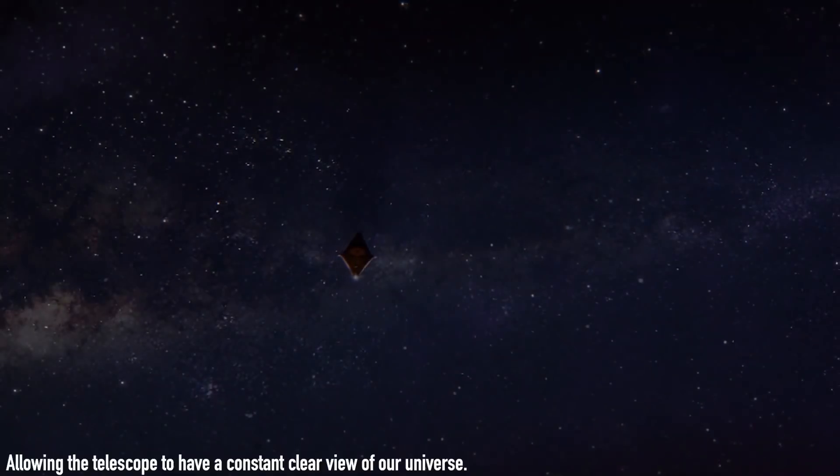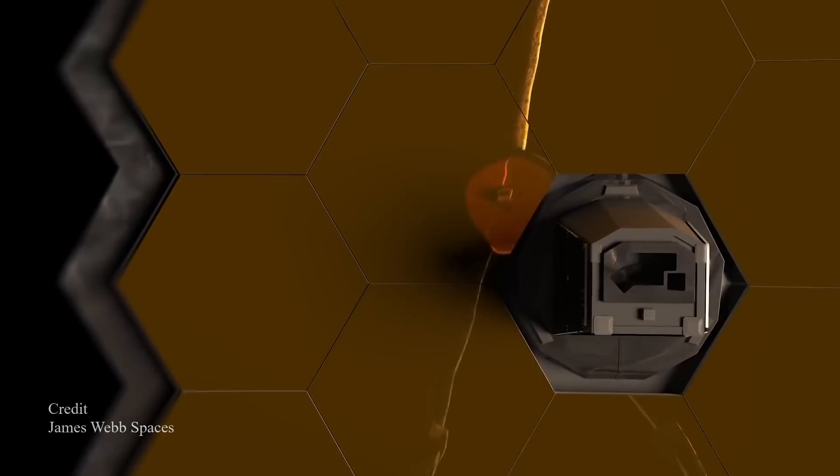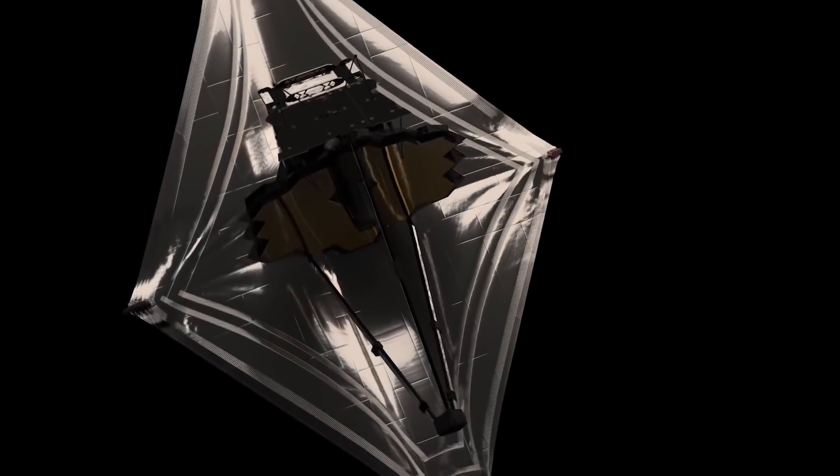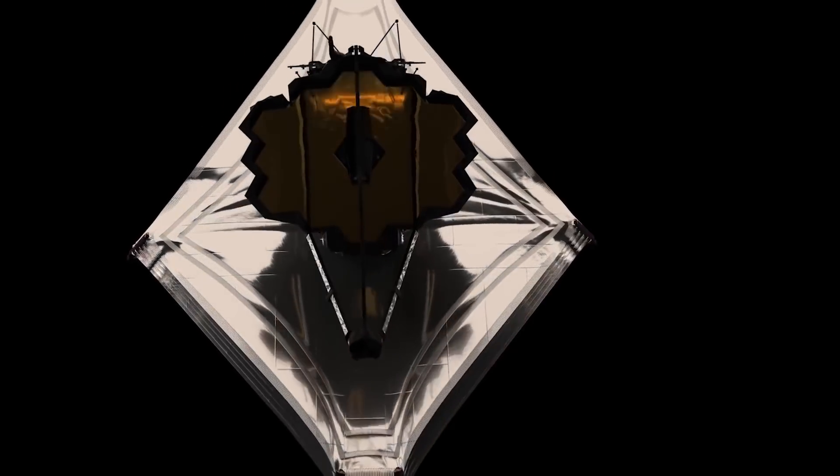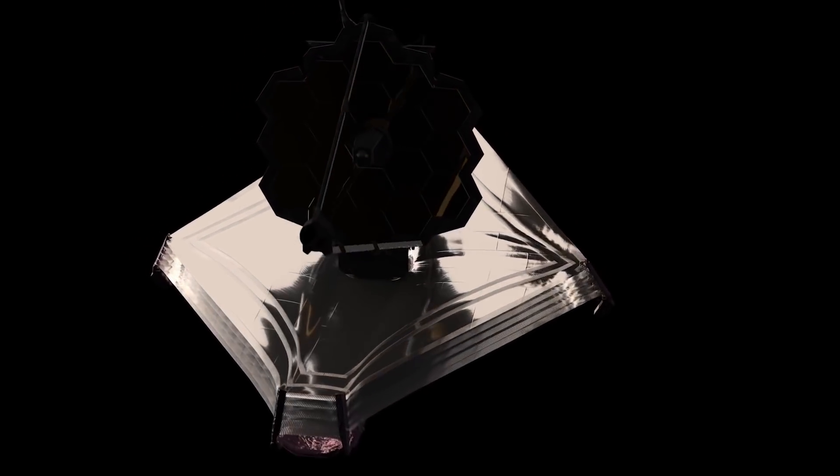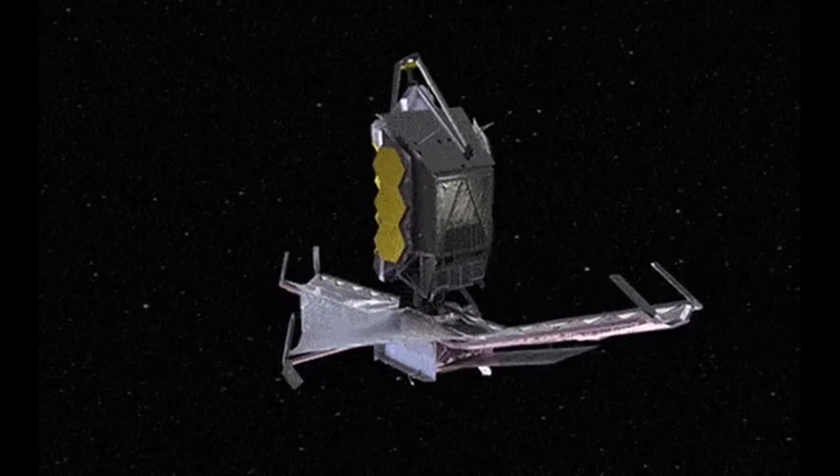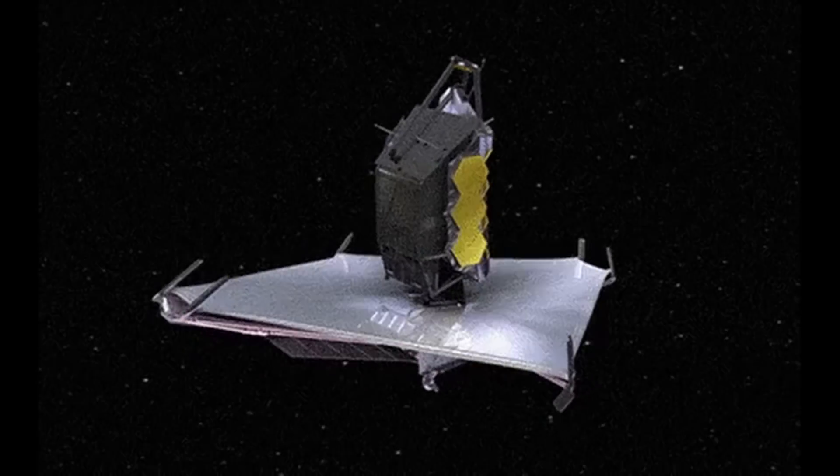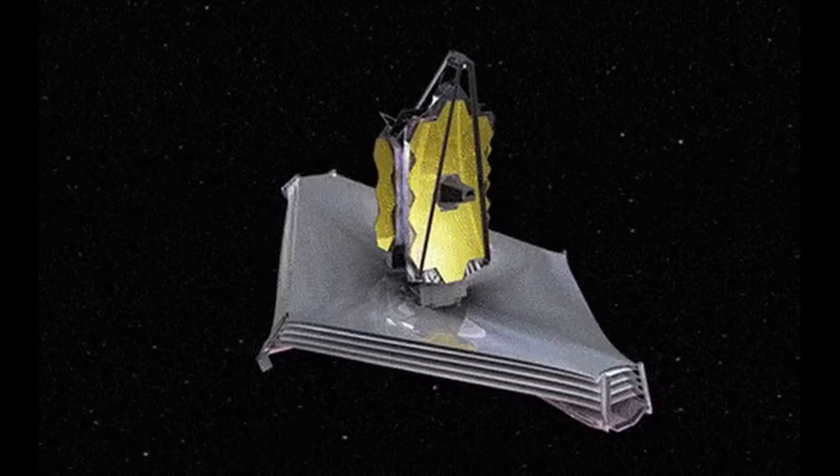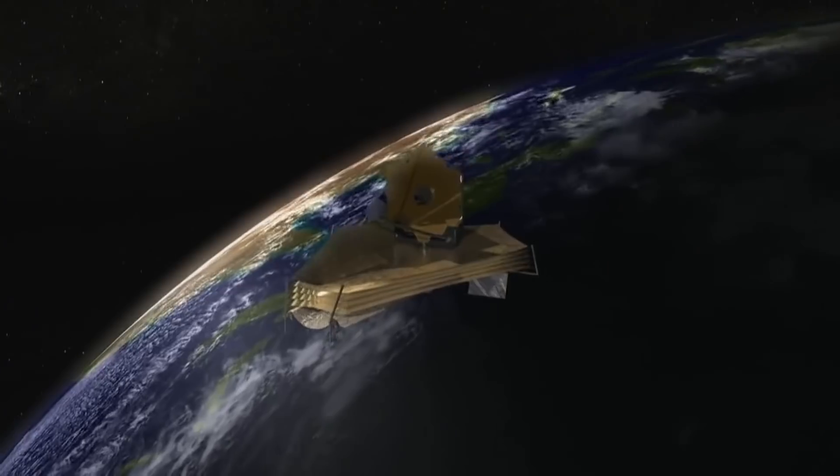To assist the Earth-Sun Lagrange Point 2 in keeping Webb at a suitable temperature, the Stargazer has also been fitted with its own special custom-made sunshield. Instead of the typical sunshades we're used to, Webb sports a gigantic deployable shield the size of a tennis court that shields its primary mirror.